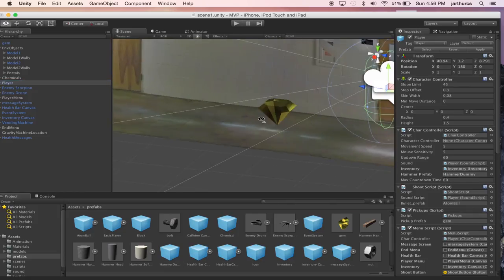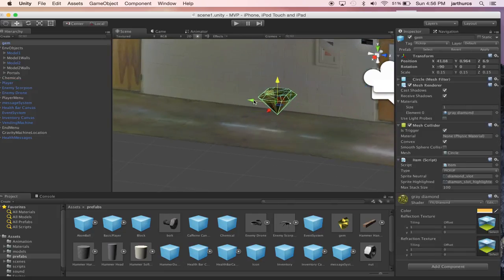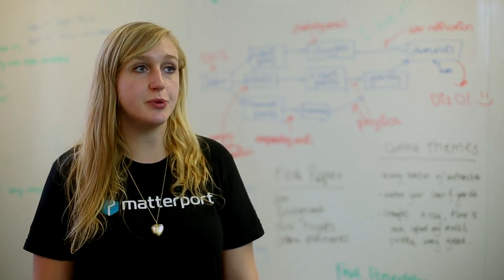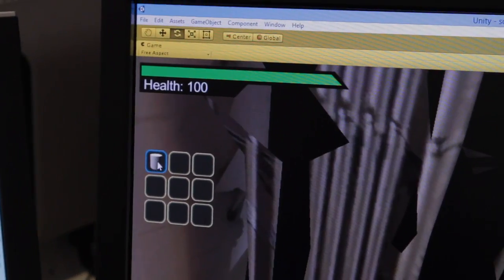In the game there's an in-app currency—we call them flux, but they're gems. I was in charge of implementing that system. Some of the features I worked on the most were the inventory and the health bar.